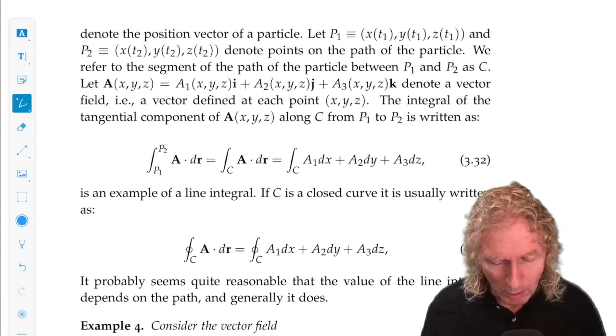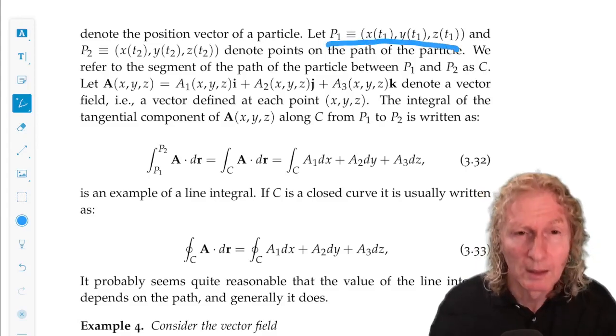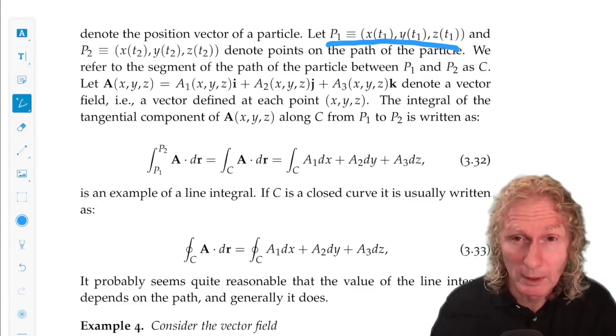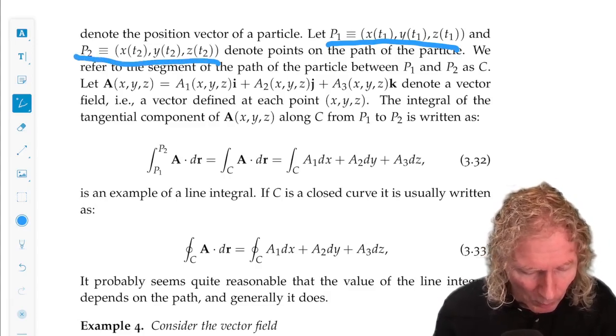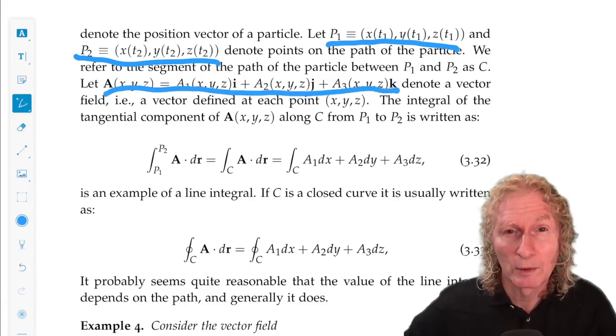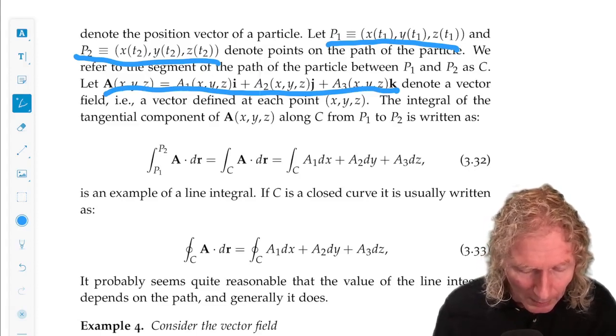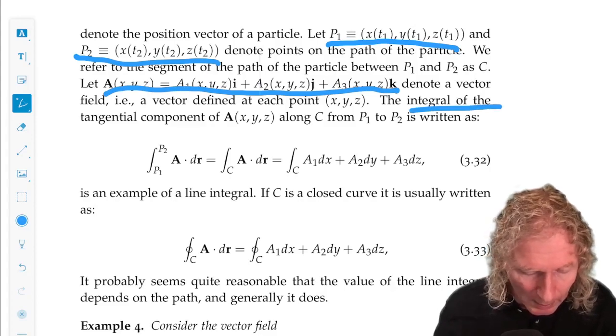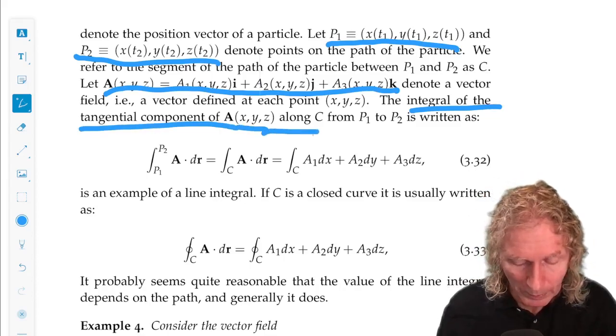So along our space curve, let's suppose we have two points, p1, that's evaluating the space curve at a particular t1, and p2. And we have our vector field or vector-valued function of a vector variable. That's a bit of a mouthful. And suppose we want to compute the integral of the tangential component of A along the space curve from p1 to p2.